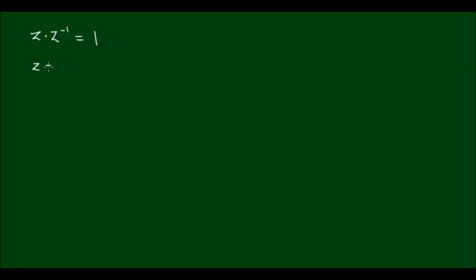The multiplicative inverse is defined as when a complex number is multiplied by its inverse, the result is equal to 1, a real number. And so for any given complex number z equals a plus bi, it has been found that the multiplicative inverse of that complex number is equal to a divided by a squared plus b squared, minus b divided by a squared plus b squared times i.